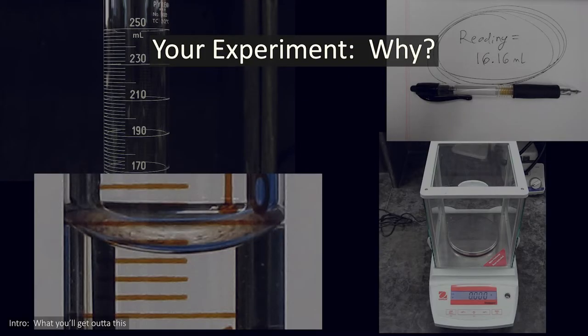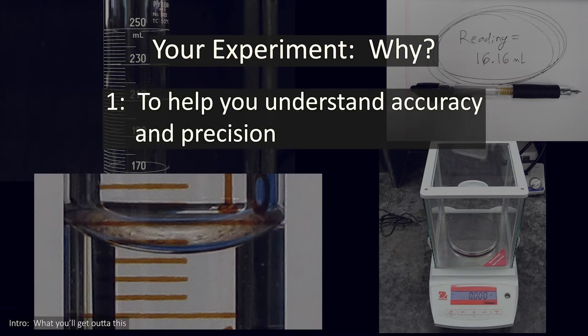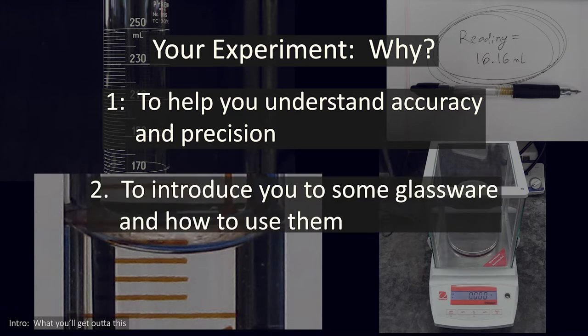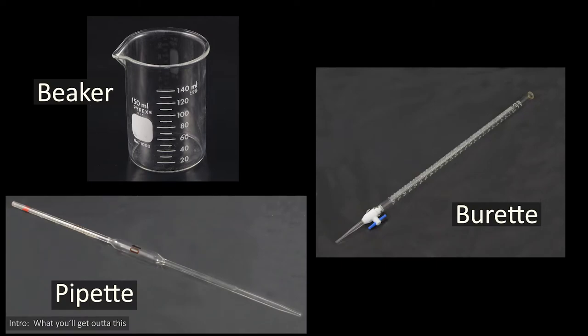Let's start by talking about what the point of this experiment is. This experiment has two major goals. First, it will help you understand what accuracy and precision are. Second, it will introduce you to three different pieces of lab glassware and teach you how to properly use and read them. These pieces are the beaker, the pipette, and the burette.